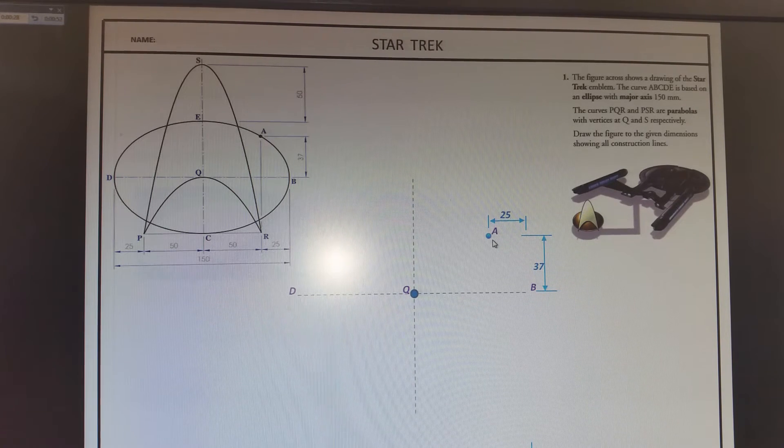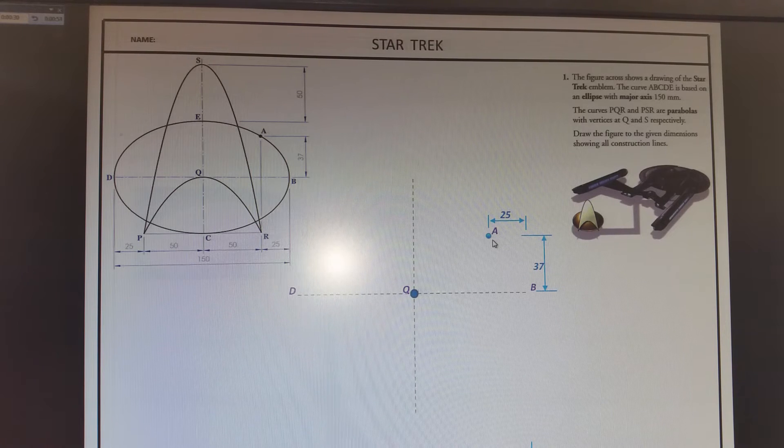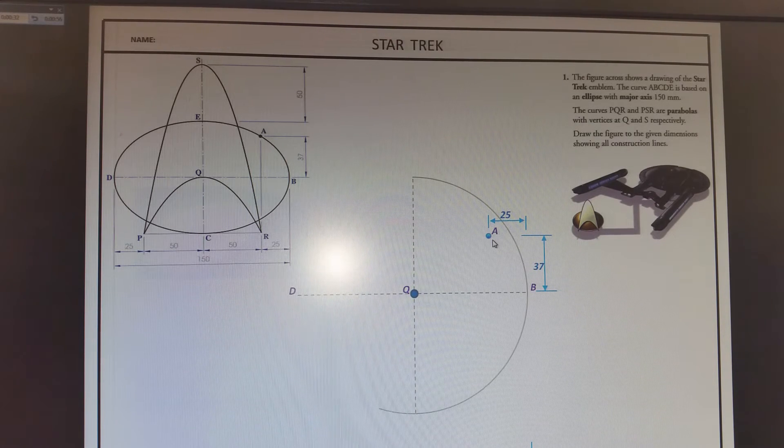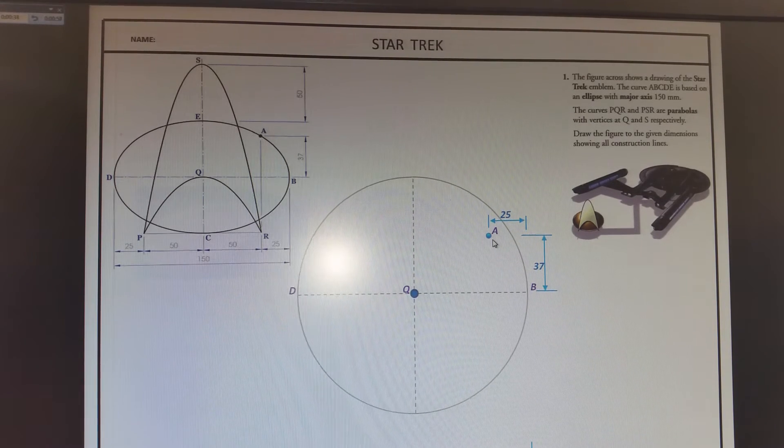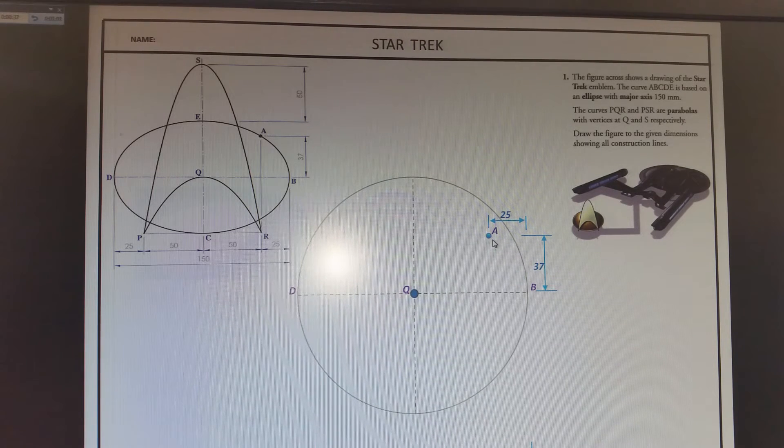So the first thing to do is to draw the major circle, because we can do that. Now, note we don't have the minor axis, so we can't draw the minor ellipse.